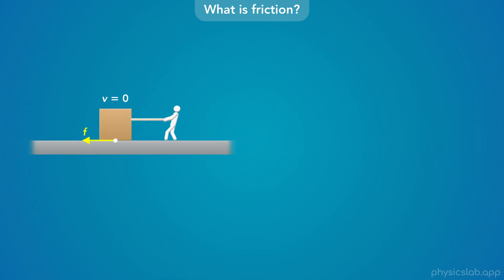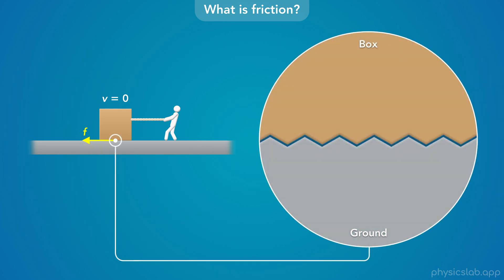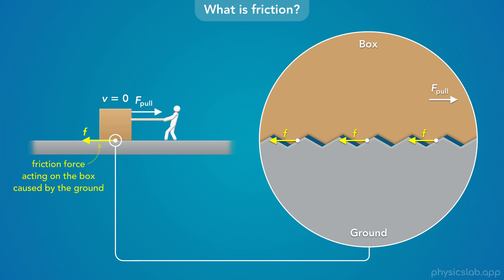But what actually causes a friction force? How can the ground apply a sideways force on the box? Objects and surfaces might appear to be smooth, but if we zoom in, all surfaces have some amount of roughness. We can imagine there are a bunch of small bumps — little peaks and valleys on the surface of each object. If you try pulling this box to the right, the bumps on the box will get stuck against the bumps on the ground. The ground exerts a bunch of small forces on the box to the left, and if we add them all together, we get the friction force on the box.